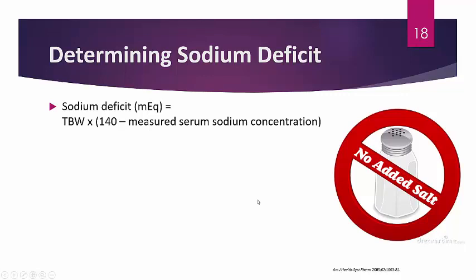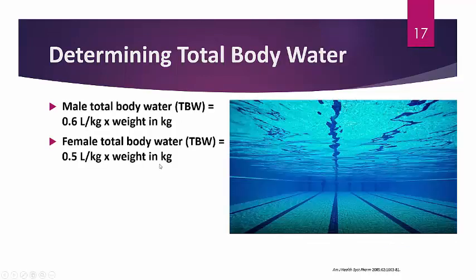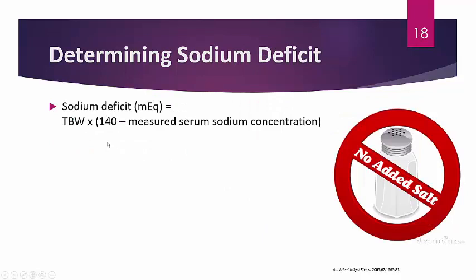The sodium deficit formula: Sodium deficit (mEq) = TBW × (140 − measured serum sodium concentration). So you calculate total body water using the previous formula, then multiply by the difference between the target sodium (140) and the patient's current sodium to get the sodium deficit — which is one of the case questions.